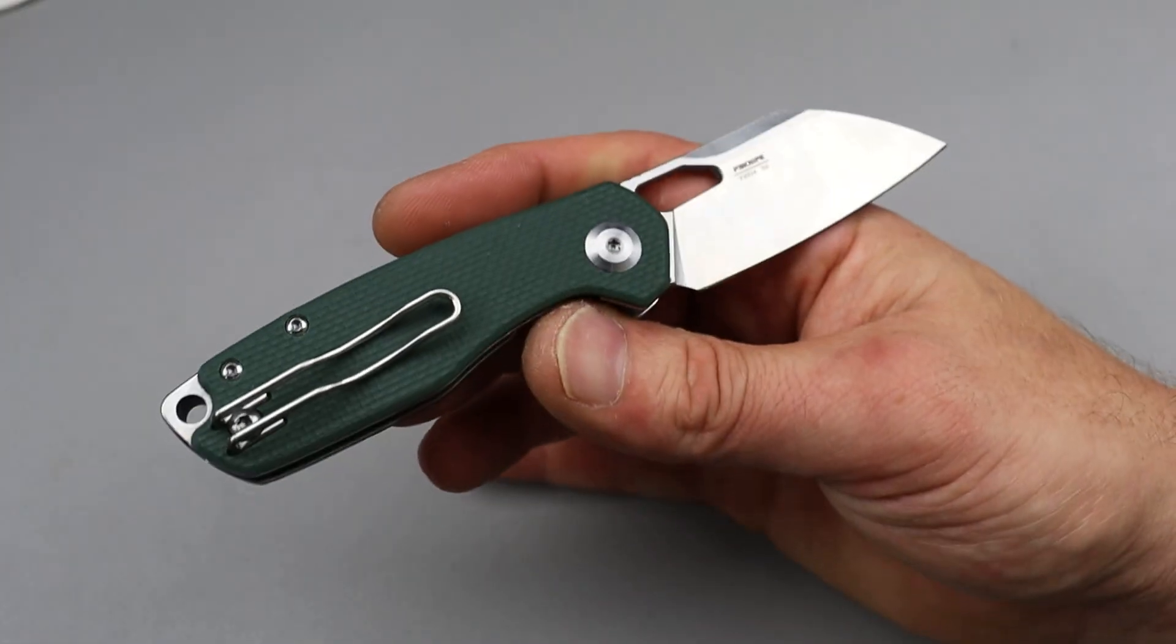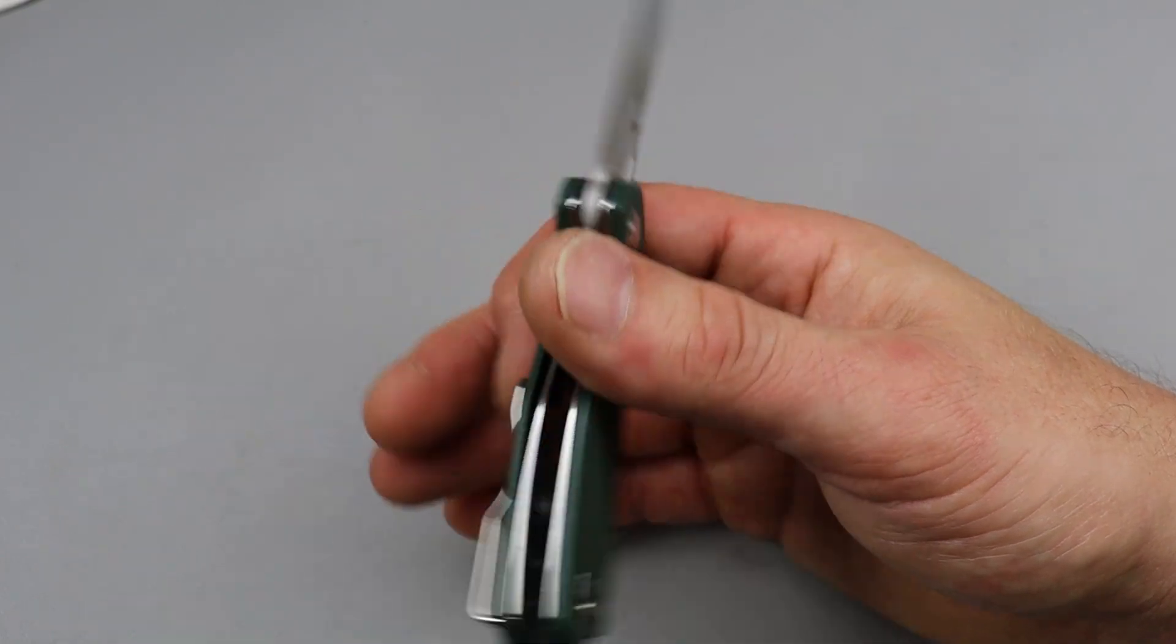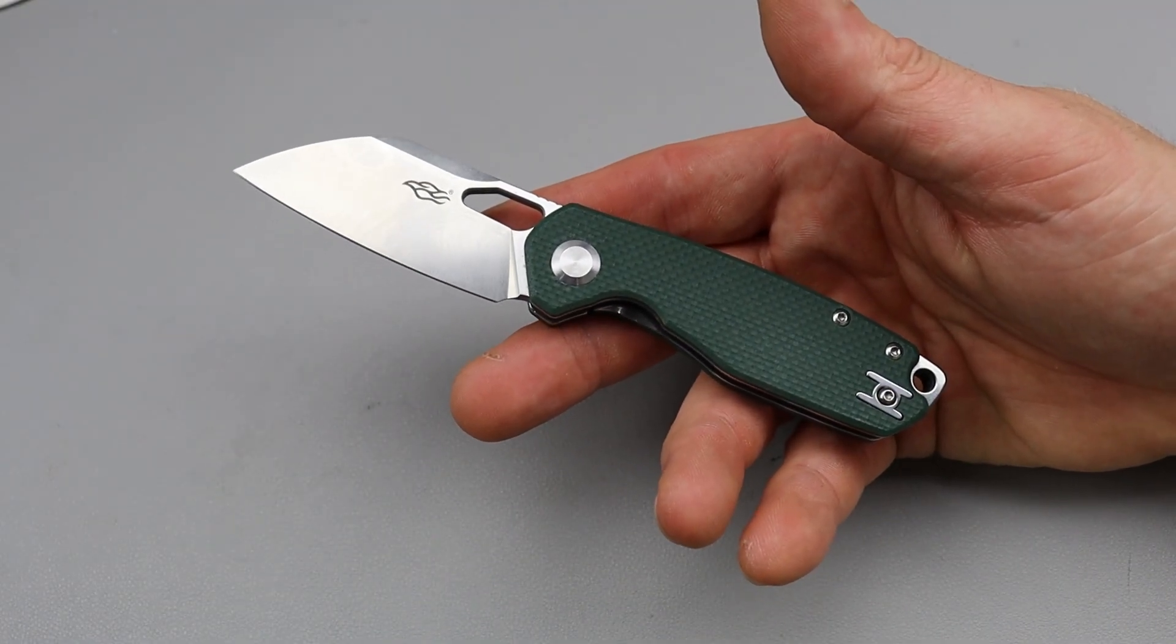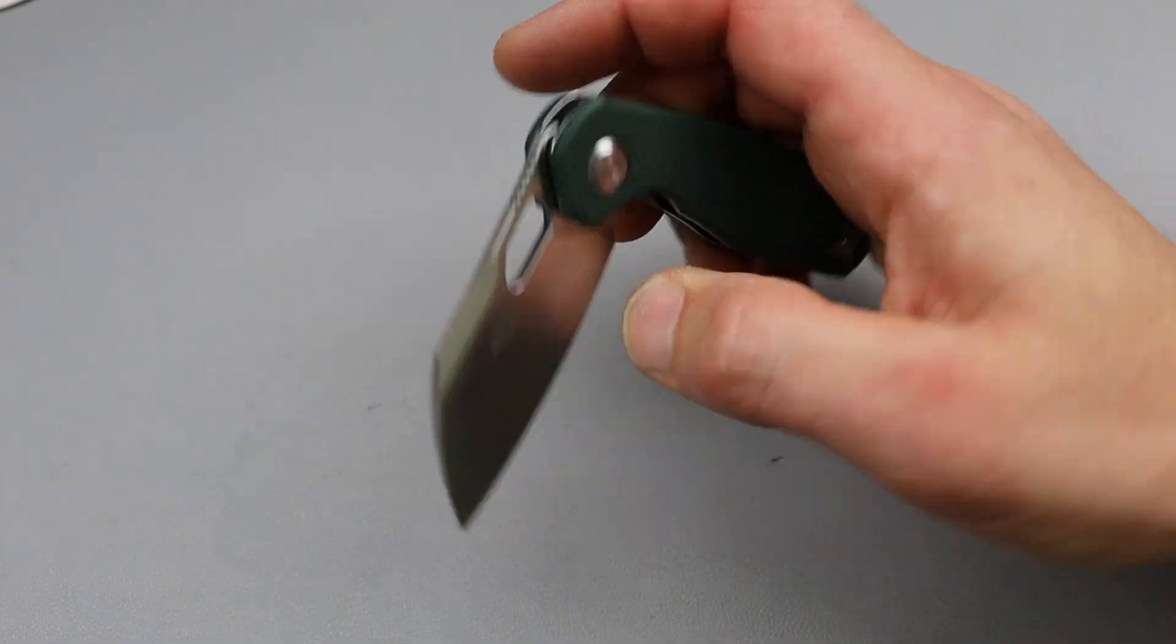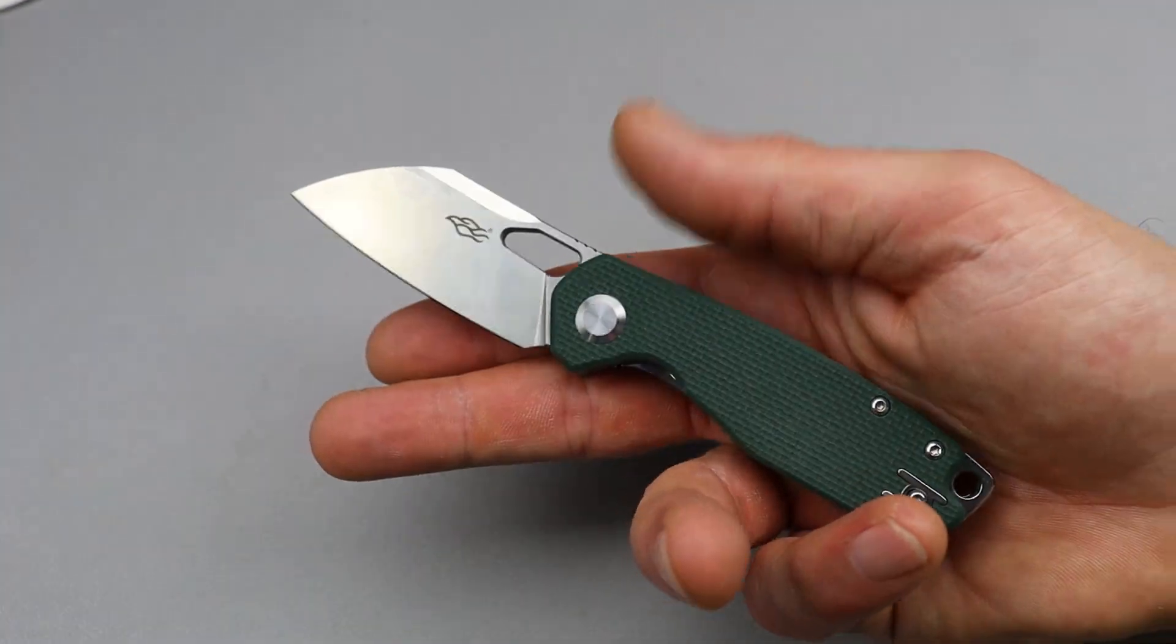Steel liner lock. D2 steel. This is a solid little knife. And these things are like I don't know 25 bucks, something like that.